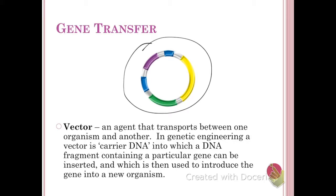Another benefit of using plasmids is that they replicate independently of the chromosomes and can also be copied many, many times via natural cloning, and then potentially be passed from one bacterial cell to another.